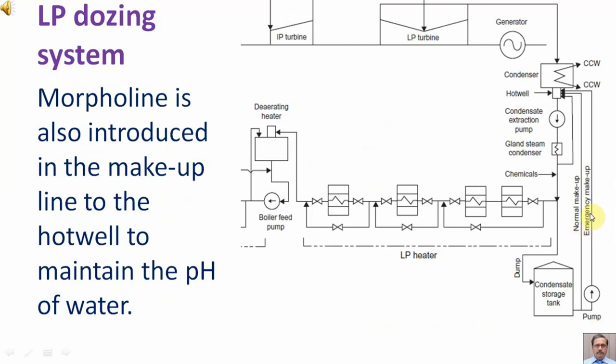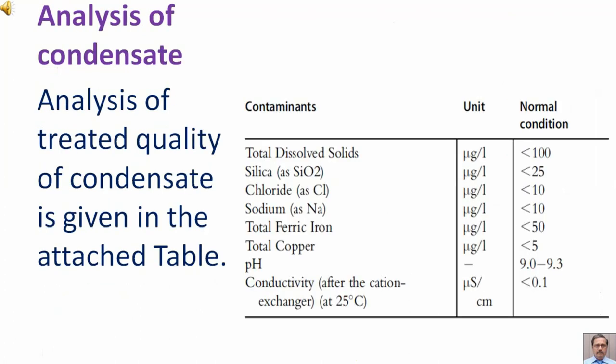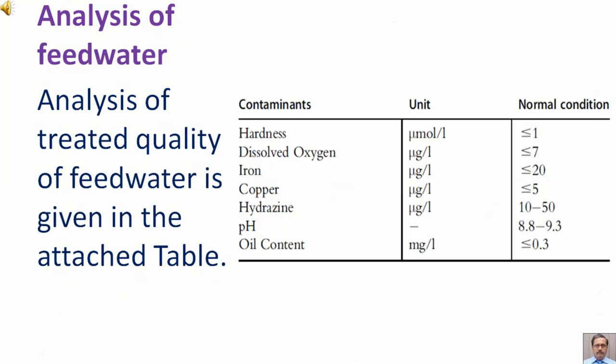These are the makeup lines to the condenser hot well from the condensate storage tank. Morpholine is also introduced in the makeup line to the hot well to maintain the pH of water. Analysis of the treated quality of feed water is given in the attached table.